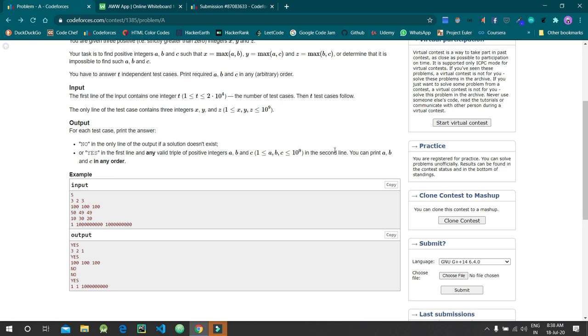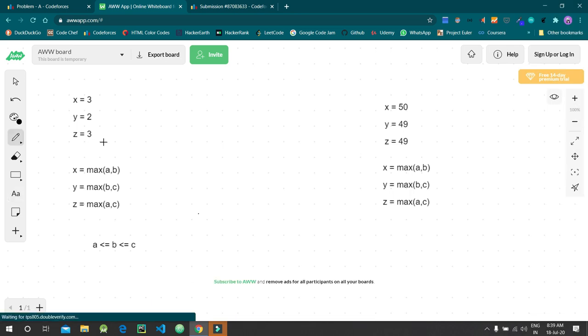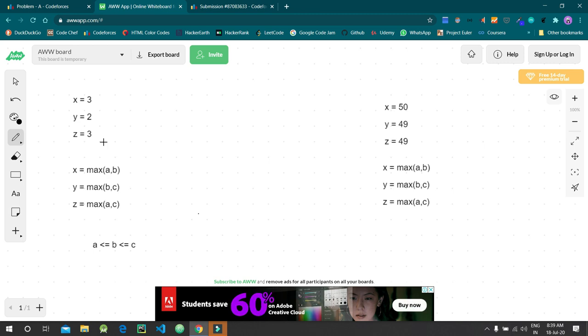For 50, 49, 49, the answer doesn't exist. Let's discuss the approach behind this problem. I have taken the first test case from the example and the third test case. I'll be explaining why the first test case answer was yes and for the third test case the answer is no.